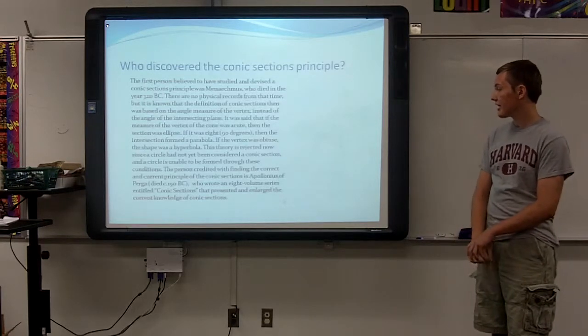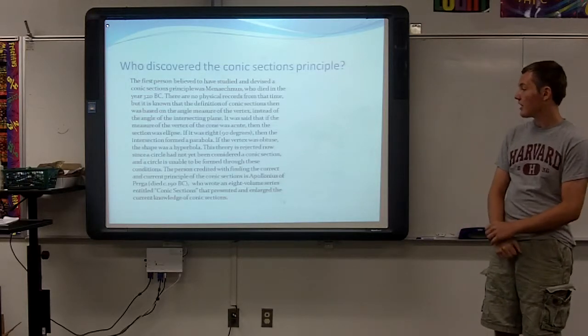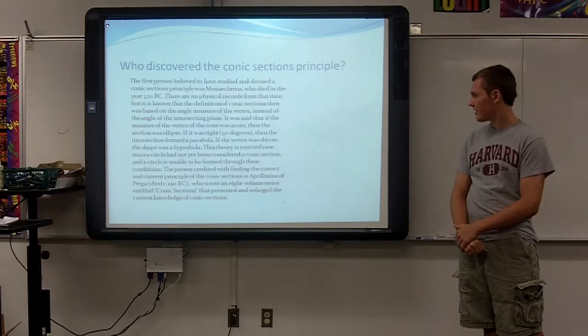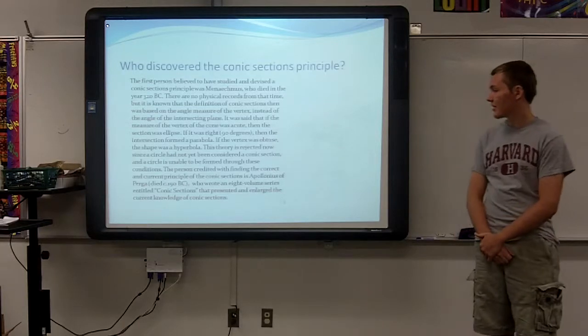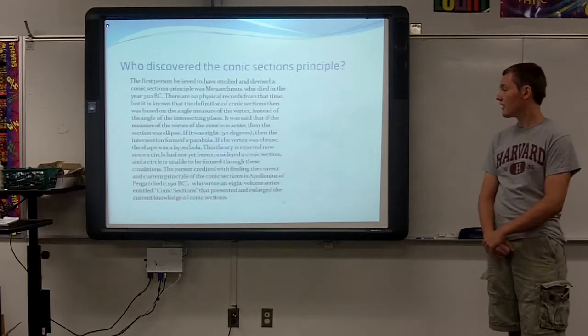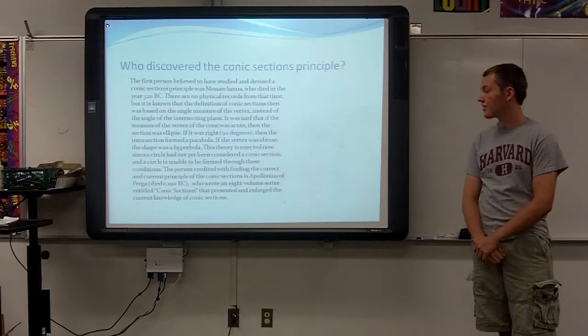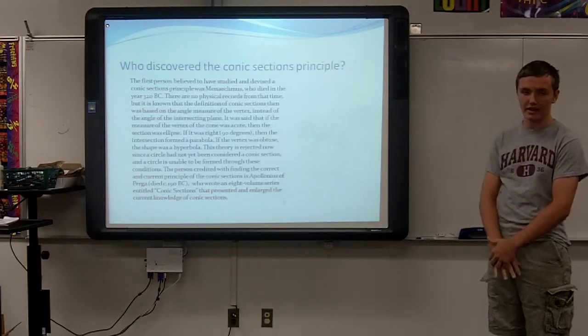The person credited with finding the correct and current principle of the conic section is Apollonius of Perga, died in 190 BC, who wrote an eight-volume series entitled Conic Sections, that presented and enlarged the current knowledge of conic sections.